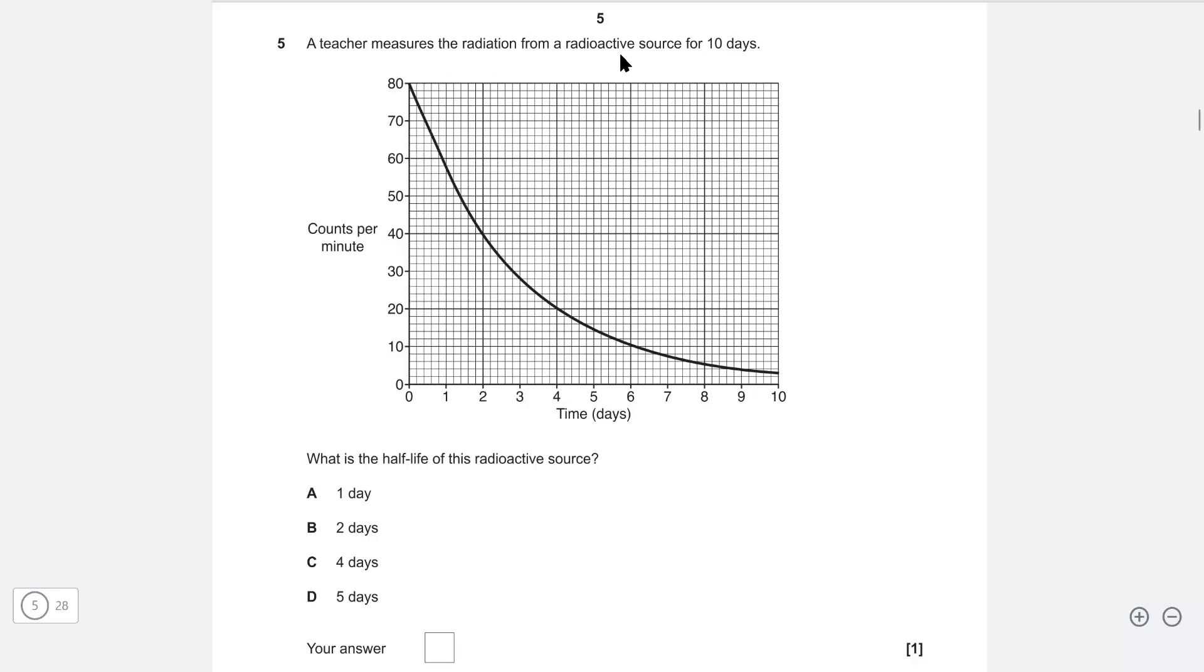A teacher measures the radiation from a radioactive source for 10 days, and we need to determine the half-life of this source. The half-life means that the count rate will decrease by a factor of a half. A half of 80 is just 40. When did that happen? We simply trace this, and we can see that corresponds to two days. Therefore, the correct answer is B.